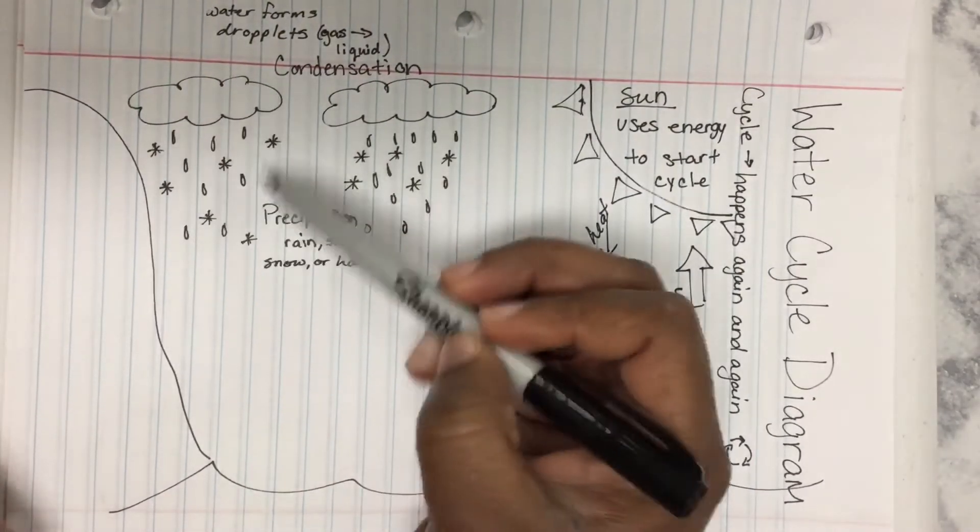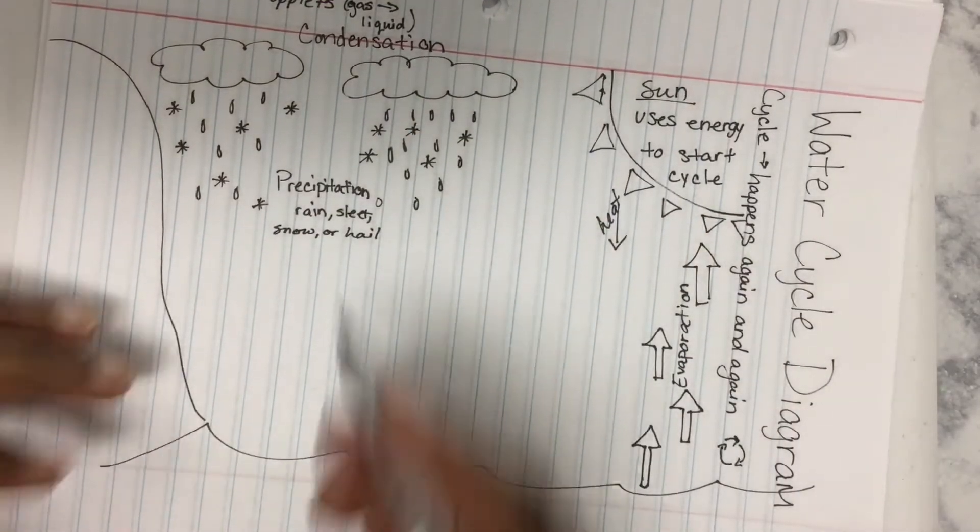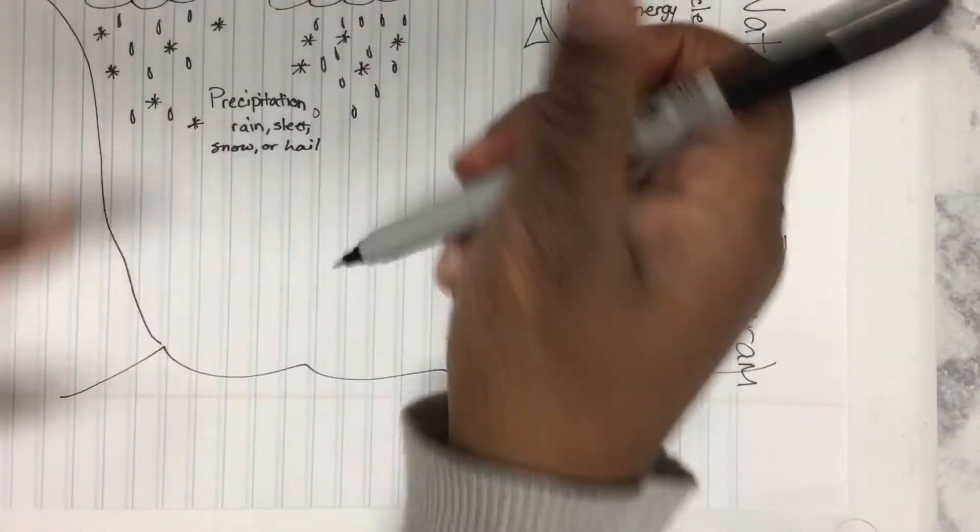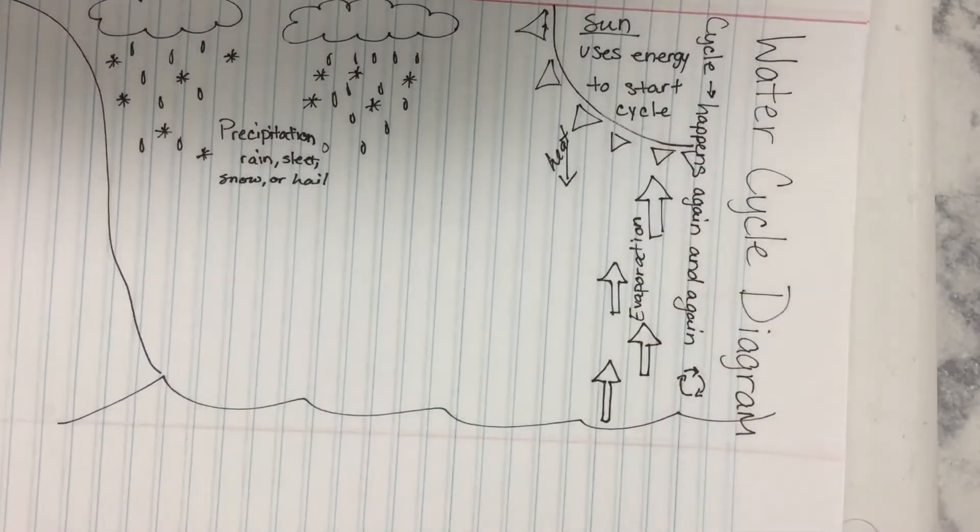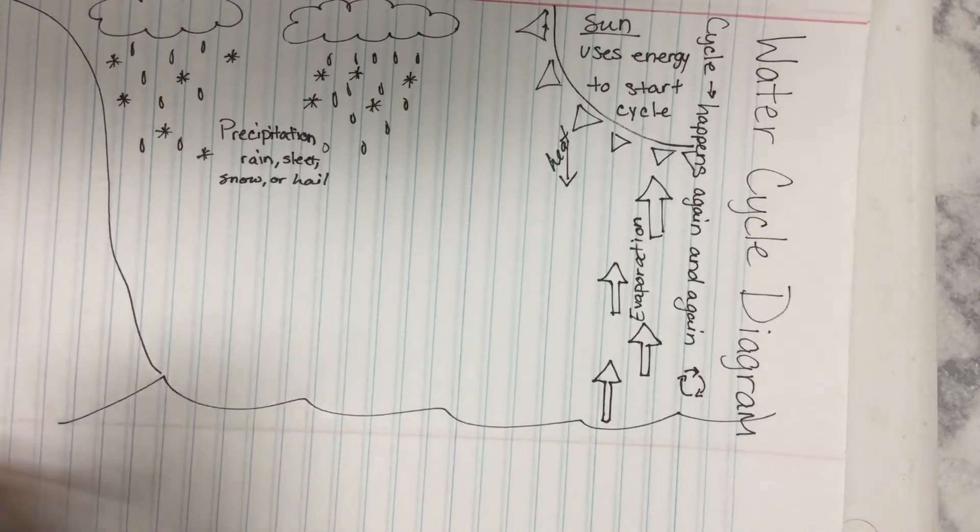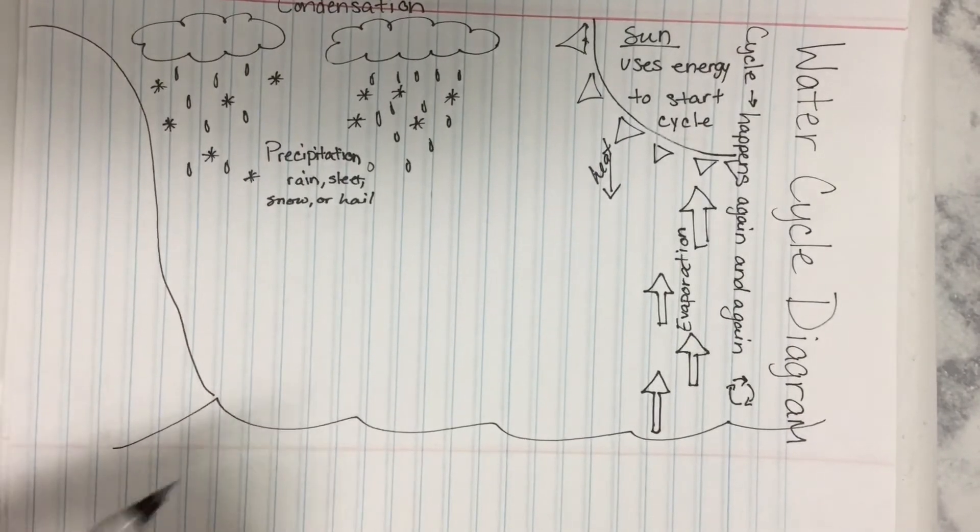So, all of this rain, sleet, snow, hail, whatever we have is going to go onto our ground. Now, it can go immediately into a body of water. It can go to a puddle. It could run off of a hill, which is what we're going to talk about next. There's many different places that the cycle could go from here, but we always want to include as many things as possible.